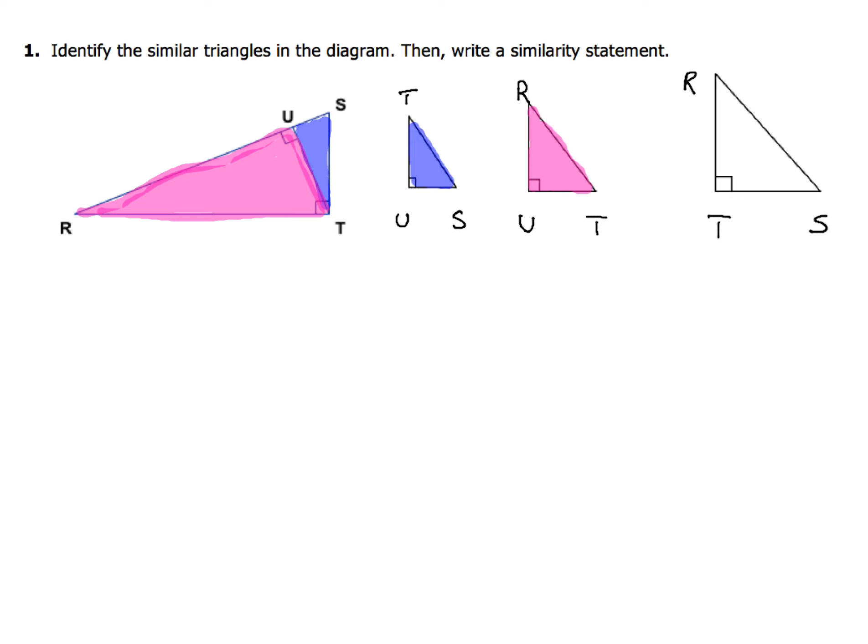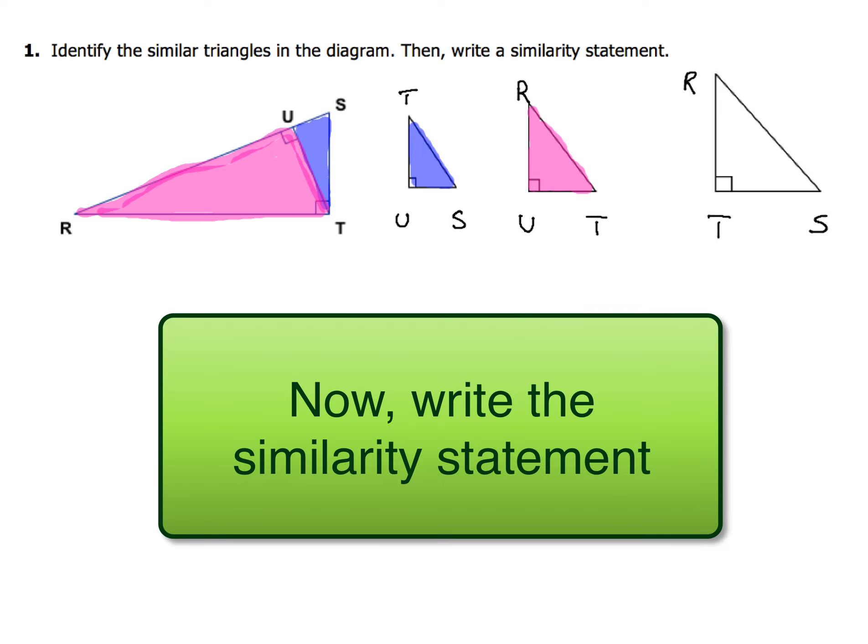Now after that, go ahead and write the similarity statement based on those three triangles. If you didn't get that right, that's alright. No worries. Just fix it and then write the similarity statement. Come on back in a moment and see how you did.